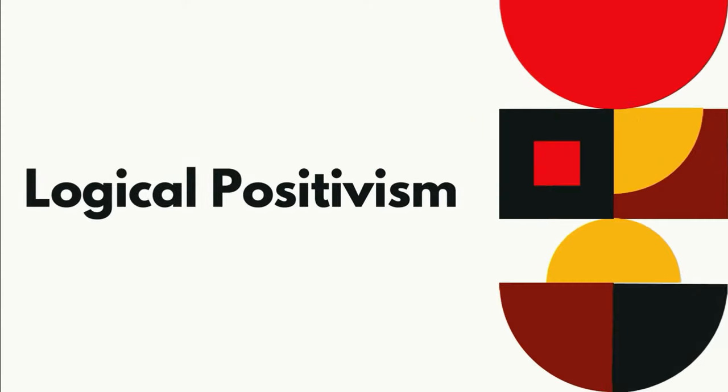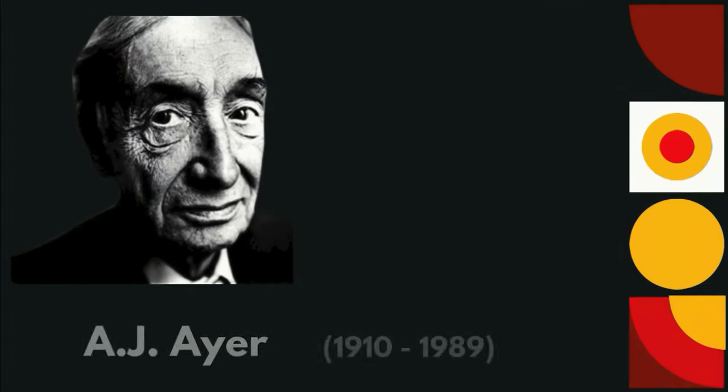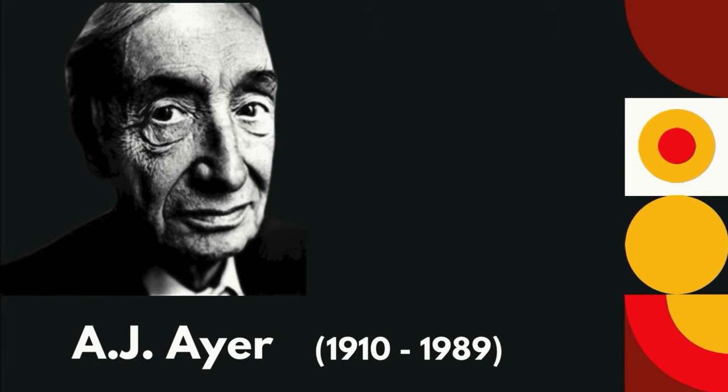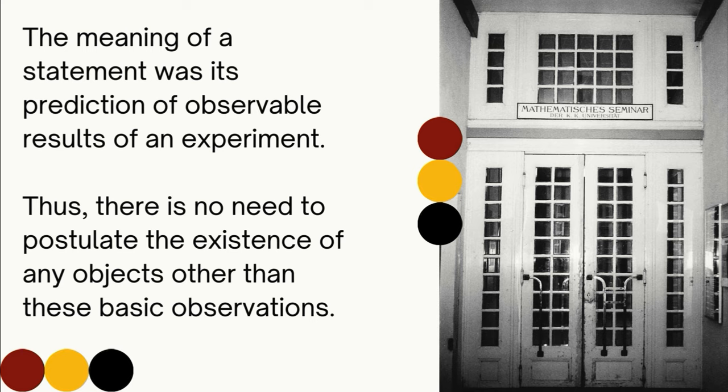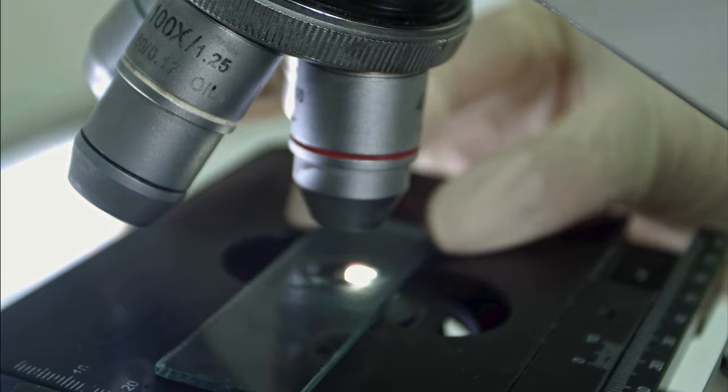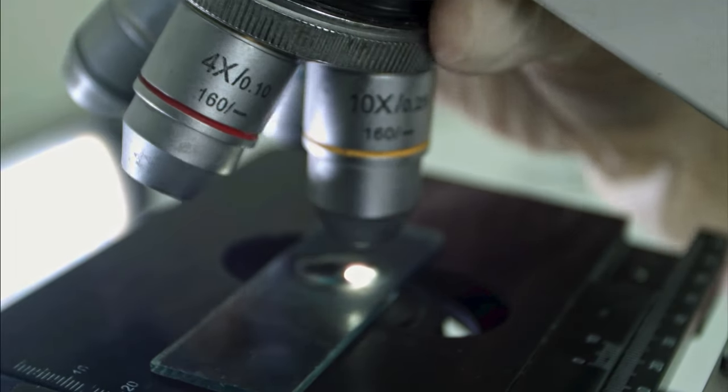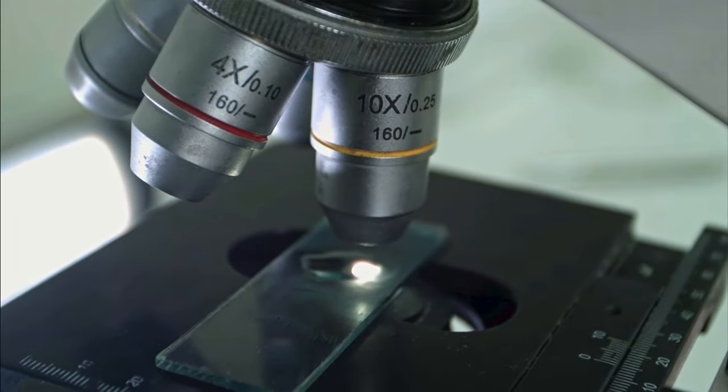Skepticism that metaphysics was not possible continued into the 20th century, with the logical positivist movement. Philosophers including A.J. Ayer and those in the Vienna Circle School of Thought believed that only statements verifiable through direct observation or logical proof are meaningful. The meaning of a statement was its prediction of observable results of an experiment. Thus, there is no need to postulate the existence of any objects other than those basic observations. In other words, there is no need to do metaphysics since metaphysical claims require more knowledge than what could be learned in an observable experiment.